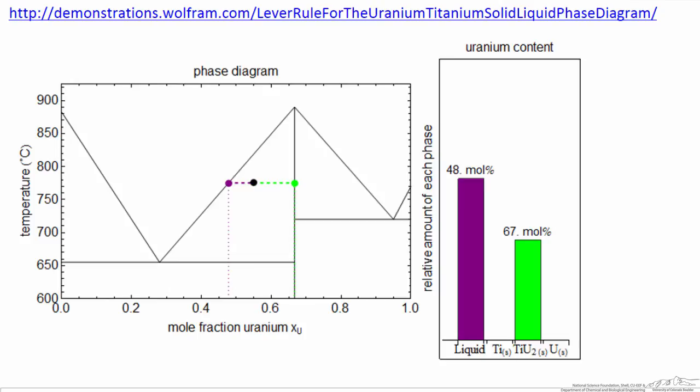What I want to show you is the various regions. I'm plotting temperature as a function of mole fraction uranium, so it's pure uranium here, pure titanium here. And this line corresponds to a compound, a stoichiometric compound. The region above, all liquid. This region, of course this is the same region, all liquid.